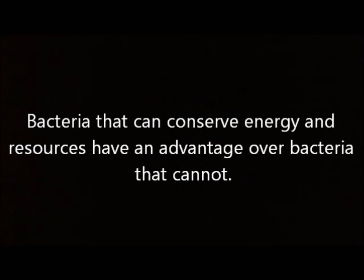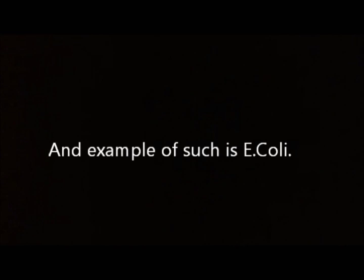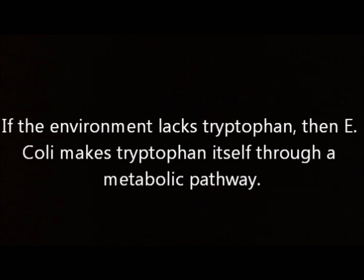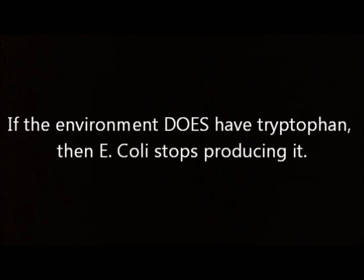Bacteria that can conserve energy and resources have an advantage over bacteria that cannot. An example of such is E. coli. E. coli lives within human colons and depends on the nutrients that its host provides. If the environment lacks tryptophan, then E. coli makes tryptophan itself through a metabolic pathway. If the environment does have tryptophan, then E. coli stops producing it.